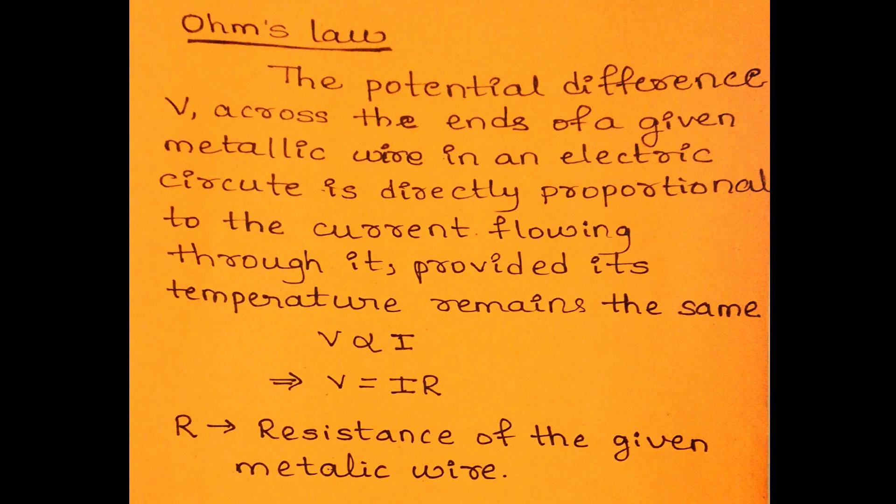That is, V is directly proportional to I. This implies V equal to IR, where R is the resistance. Resistance is the opposition to the flow of current in a conductor.